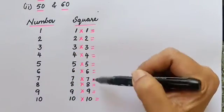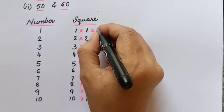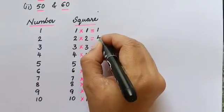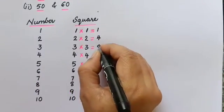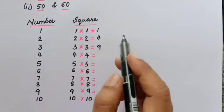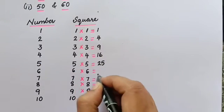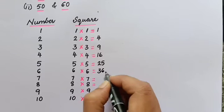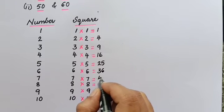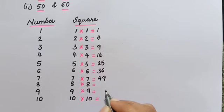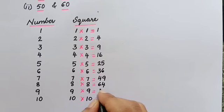One times one is 1, two times two is 4, three times three is 9, four times four is 16, five times five is 25, six times six is 36, seven times seven is 49, eight times eight is 64.